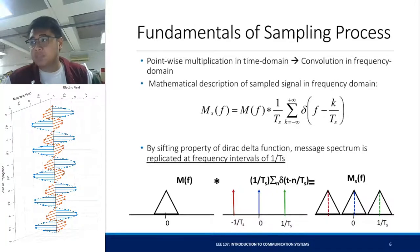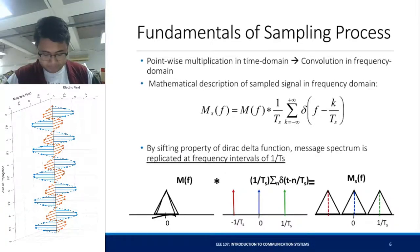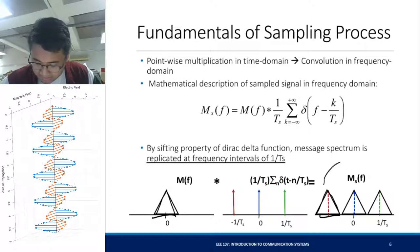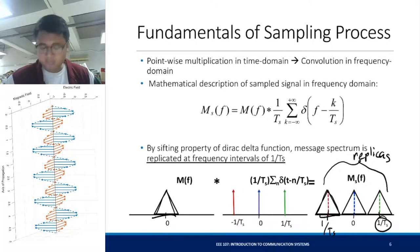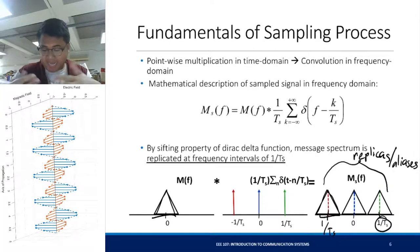Since you have a point-wise multiplication in the time domain — you multiply two signals in the time domain — the effect in the frequency domain will be a convolution. If your message signal has a spectrum defined by M of f, you will convolve that with an impulse train. By using the sifting property of your impulse response, you will see that your message signal will have replicas every 1 over T_S spacing in the frequency domain. These replicas are actually your aliases, and this is present in every digital signal.